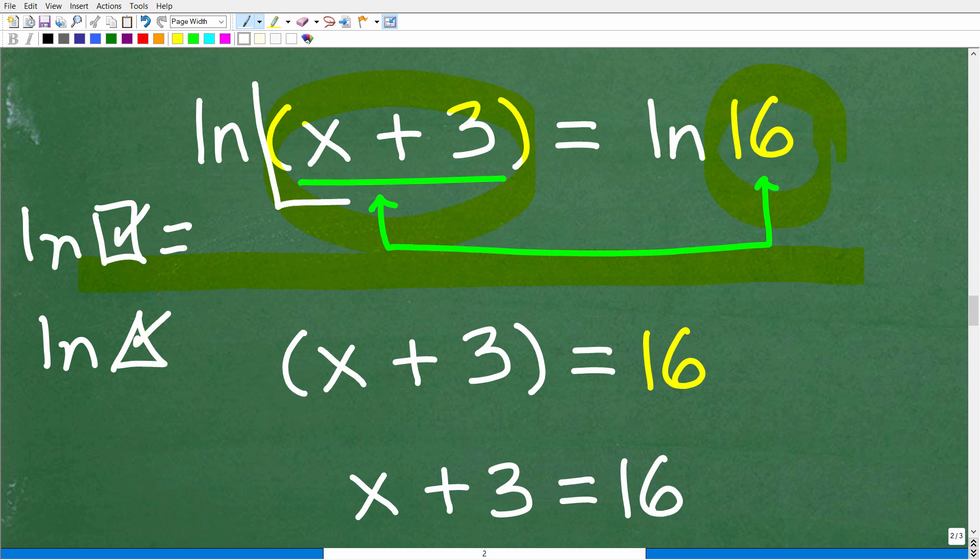So in other words, ln(x + 3) = ln16. Well, that means that x + 3 must equal 16 for this entire equation to be true. So if we can solve this basic linear equation, x + 3 = 16, we could solve the actual equation.